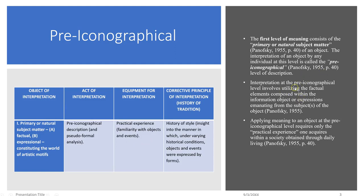When talking about factual elements with objects with writing on them, typically the museum professional or information professional extracts the words written on the object and uses them as a tag or descriptive term to describe that object. When talking about an object without any writing on it — pictorial objects — we describe that object by applying terms or descriptive tags to them. At the pre-iconographical level, when we describe the factual information of an object, the question is: did you extract the words or text on that object and use them as a tag or descriptive term?